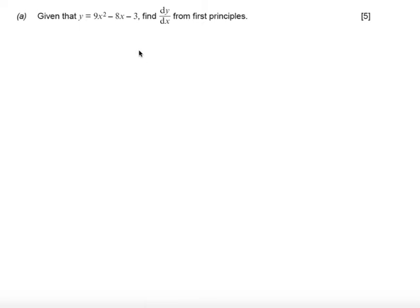In this question, we're asked to, given that y equals 9x squared minus 8x minus 3, find dy by dx from first principles. The first thing to do, the approach I take, is to state that f of x is 9x squared minus 8x minus 3.